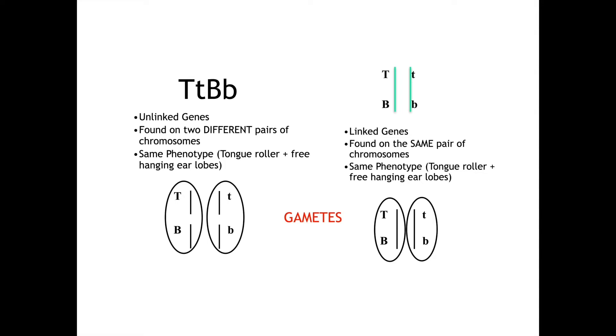So if they are linked on the right-hand side, they are found on the same pair of chromosomes. But on the left-hand side, they're found on different pairs of chromosomes. So if you then move to the gametes at the bottom, on the left-hand side with the unlinked example, you can have the gametes that you can see right there.